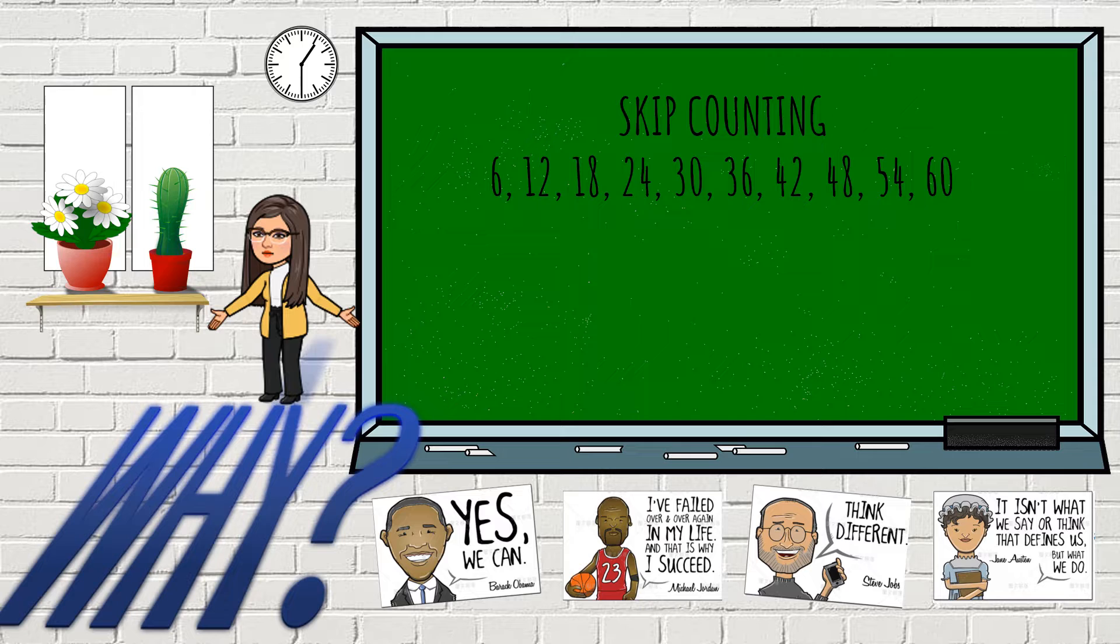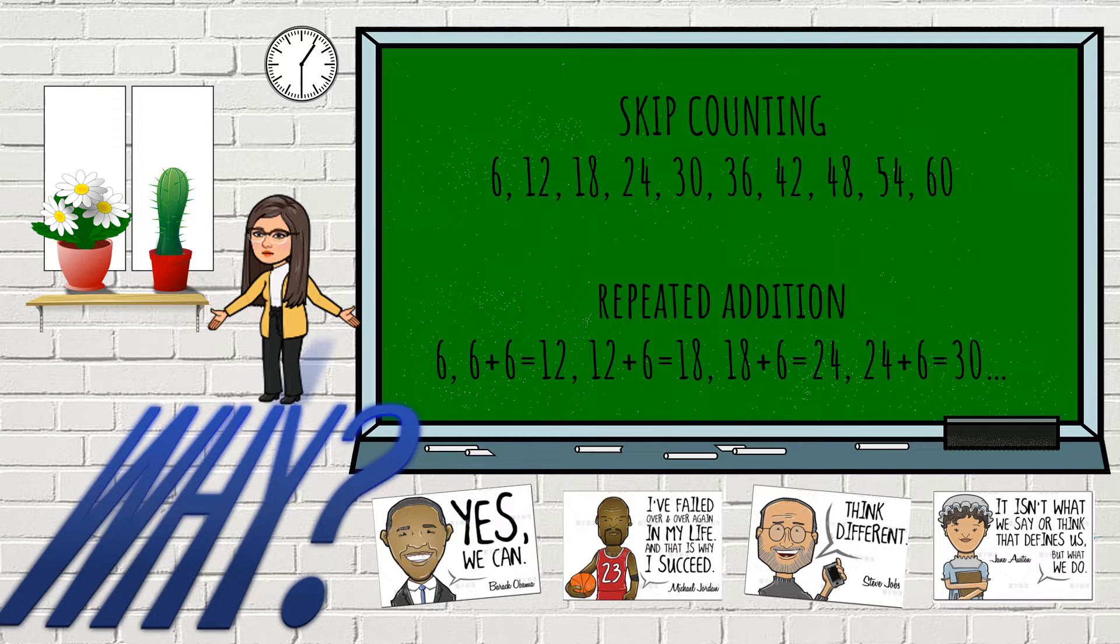So as you skip count you may need to use your finger and you will be able to remember 6 times what equals 30. For some of you who can't remember this well you are even still doing repeated addition. For example you may go by 6, the next number is 6 plus 6 which is 12, 12 plus 6 is 18, 18 plus 6 is 24, 24 plus 6 is 30. So the problem with this is that when you skip count you may miss a count.